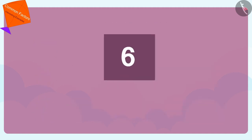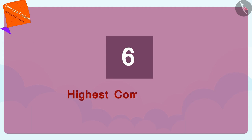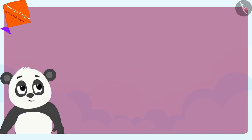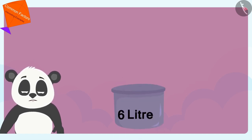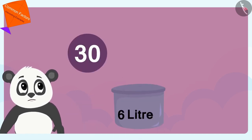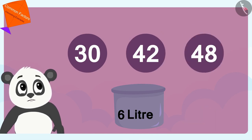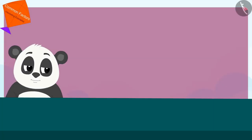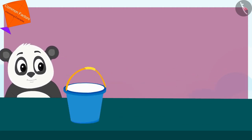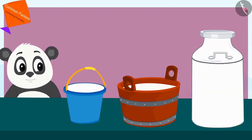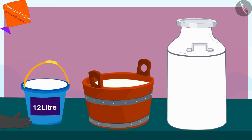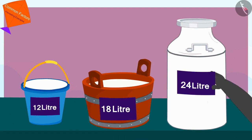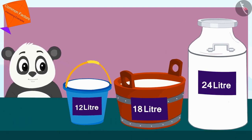Out of them, 6 is the highest number or the highest common factor. Therefore, Golu would use only a 6-liter pot to measure 30, 42 and 48 liters of milk. Golu measured the milk filled in his pots and labeled them so that he again does not forget the amount of milk filled in them.